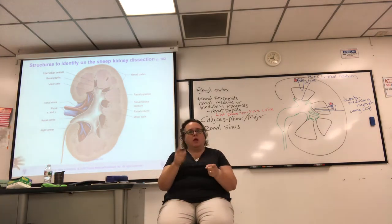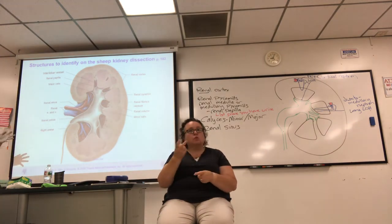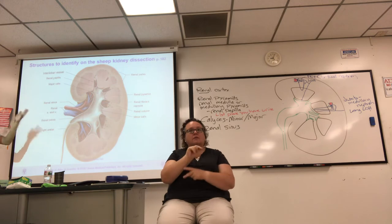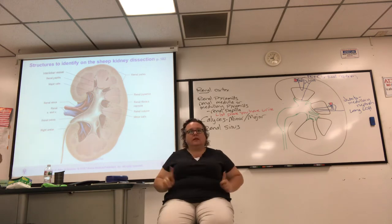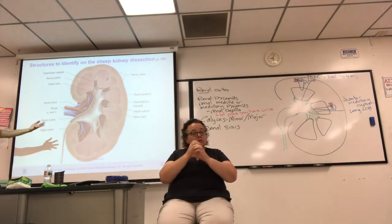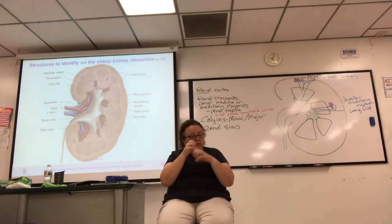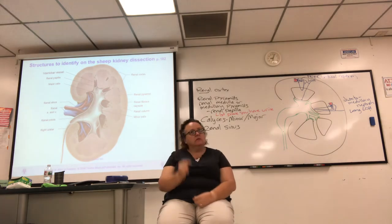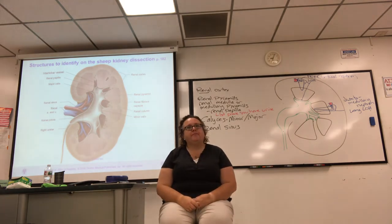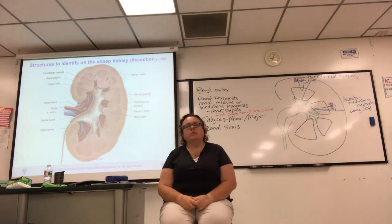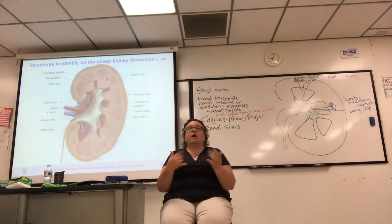So there are two kinds of nephrons in the kidney — it's a microscopic structure. You really need to look at this stuff under the microscope. Now we need to talk about the blood supply.